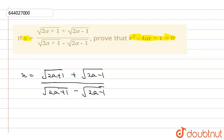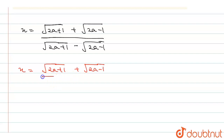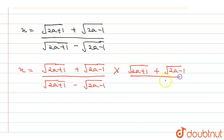First of all, we have to rationalize this expression. So we multiply numerator and denominator by (√(2a+1) + √(2a-1)), giving us (√(2a+1) + √(2a-1)) multiplied by (√(2a+1) + √(2a-1)) in the numerator, divided by (√(2a+1) - √(2a-1)) multiplied by (√(2a+1) + √(2a-1)) in the denominator.